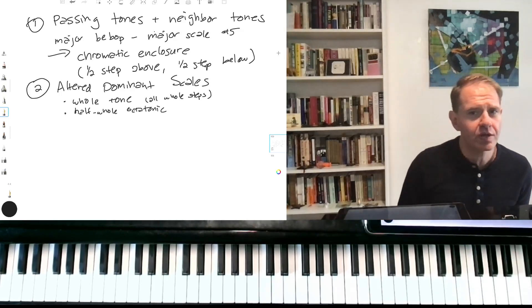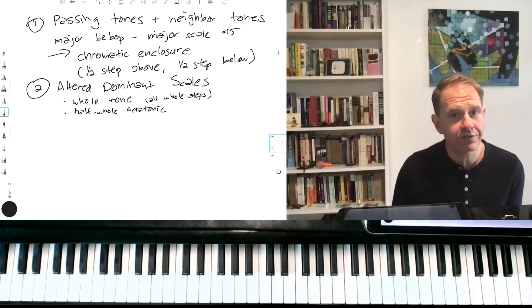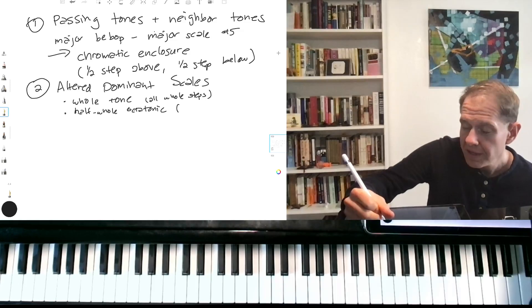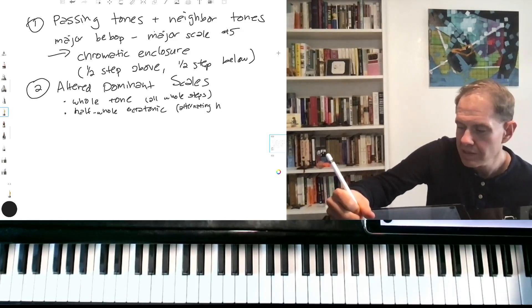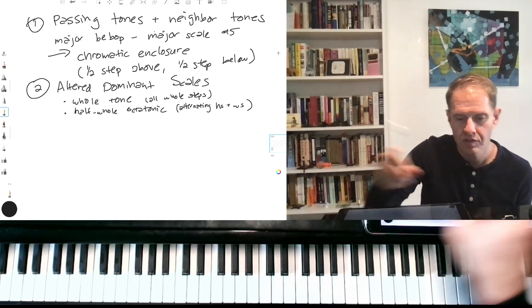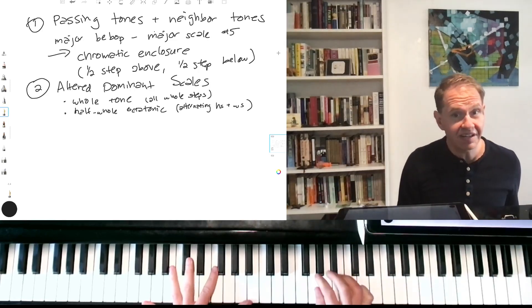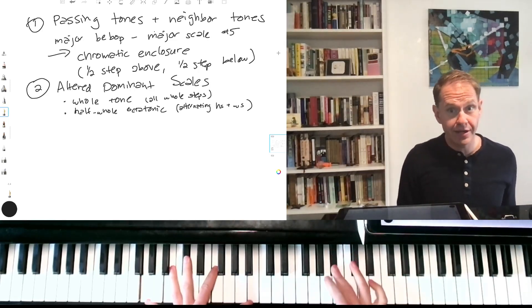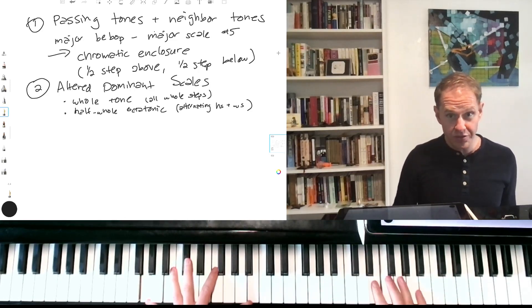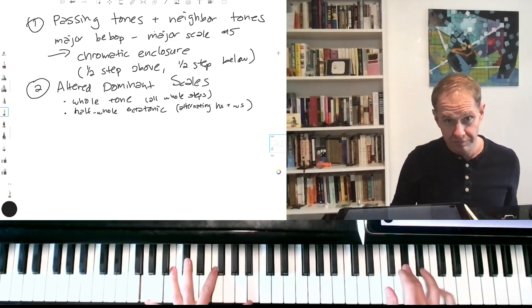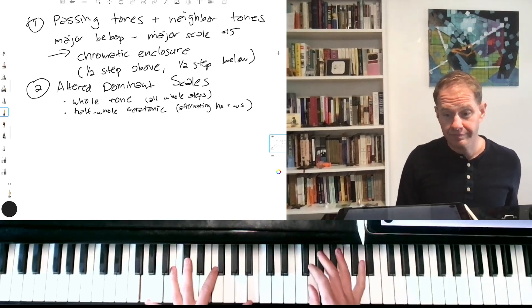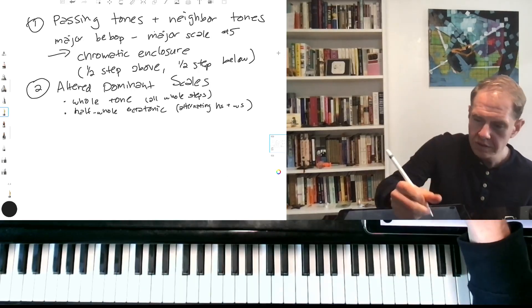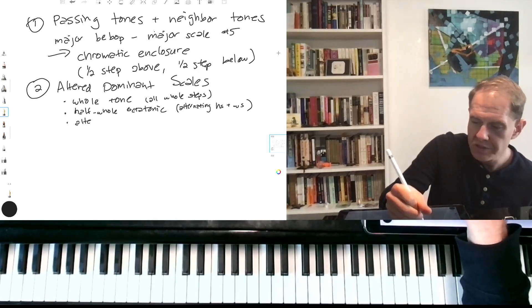The half-whole octatonic is really, really commonly used in jazz. I did a whole video deep dive on this one, so if you want some more information, look for my deep dive on the octatonic scale, sometimes called the diminished scale. And for this one, you're alternating half-steps and whole-steps. So for my G7: half-step, whole-step, half-step, whole-step, half-step, whole-step.